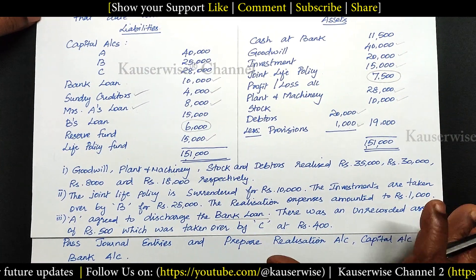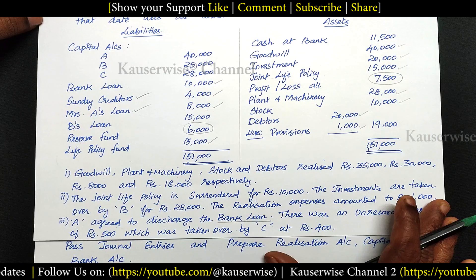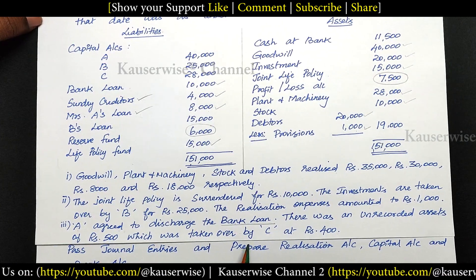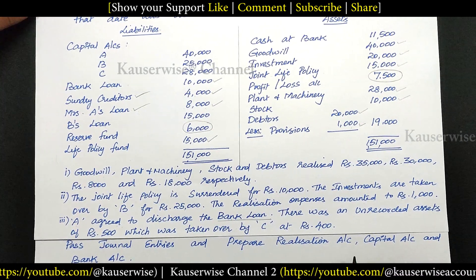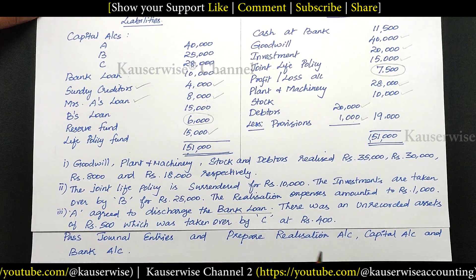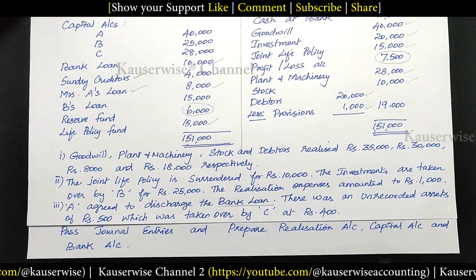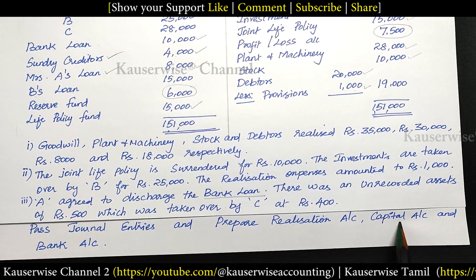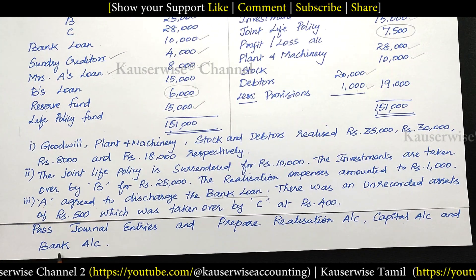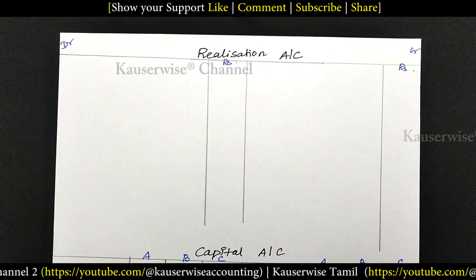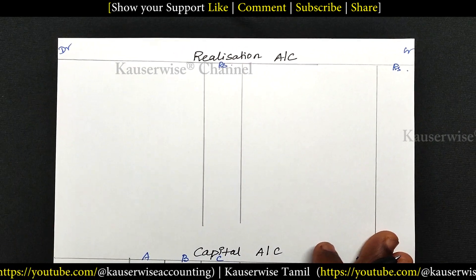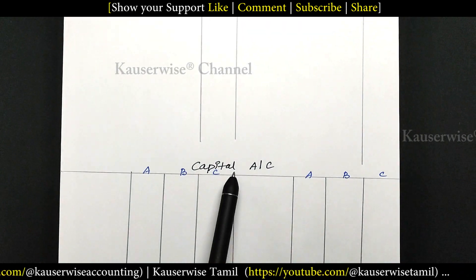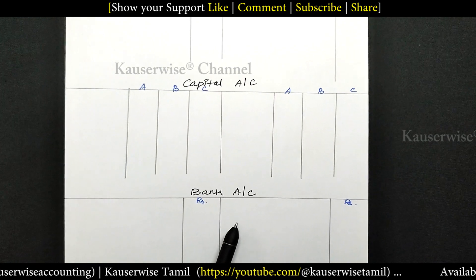So far we have seen journal entries for dissolution of the partnership firm. After making the necessary journal entries, the next step is to prepare the necessary ledger accounts: realization account, capital account and bank account. Now let's see how to post journal entries into ledger.